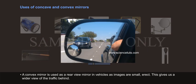A convex mirror is used as a rear-view mirror in vehicles as images are small and erect. This gives us a wider view of the traffic behind.